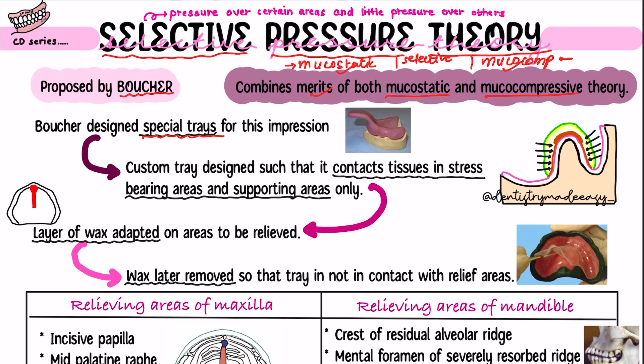For the maxilla, there are three types of areas: stress-bearing areas, limiting areas, and relief areas. Stress-bearing or supporting areas, as the name says, can have maximum pressure applied to them. Relief areas, as the name says, need to be relieved due to a number of reasons — if we apply pressure on these relief areas, some bad effects will occur. Because of that, you need to relieve certain areas of both maxilla and mandible.